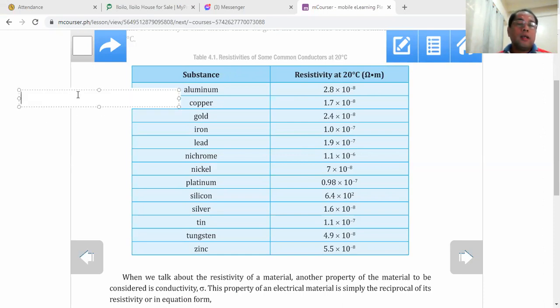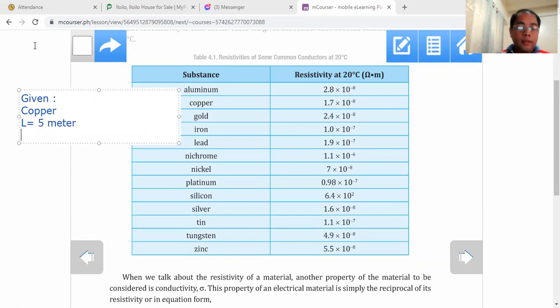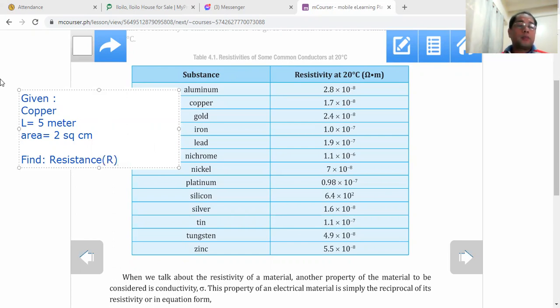Here we will not tackle the effect of temperature but simply the factor called the resistivity value. For example, let's say the material that we have is copper metal. Its length L is supposing 5 meters of copper wire, then it has an area, let's say its area is 2 square centimeters. What we want to find is the resistance R that is present in this 5 meter length of copper wire.